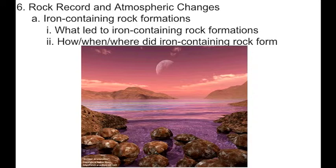When you think about what came first, producers or consumers — well, producers had to come first: life that could produce its own energy using sunlight. So, during the Precambrian, you had single-celled, photosynthetic creatures — ancient forms of algae and such — taking hold in the oceans.